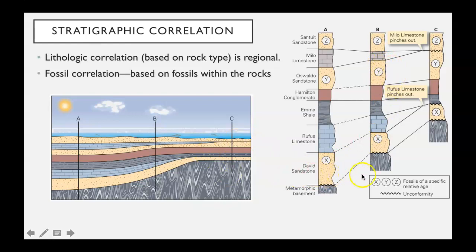Unconformities are usually designated by squiggly lines. Here are the metamorphic rocks with squiggly lines on top — what kind of unconformity would that represent? A nonconformity — that's a nonconformity, where sedimentary rocks overlie igneous or metamorphic rocks.